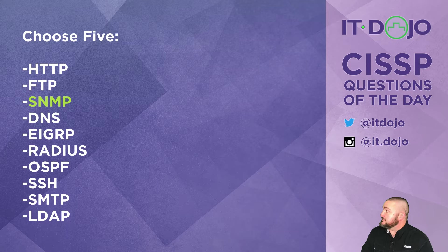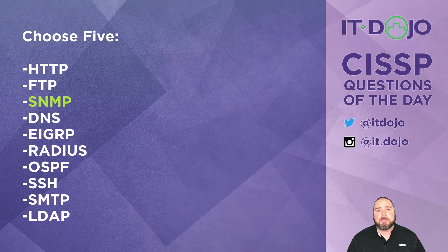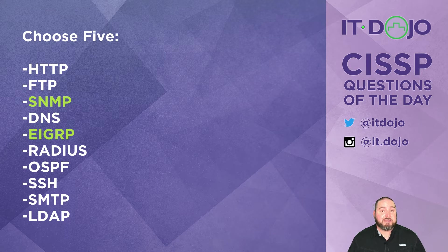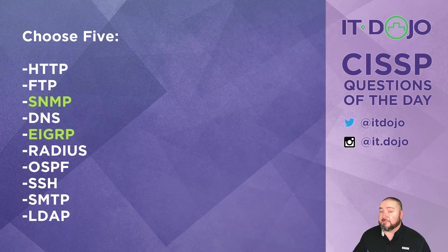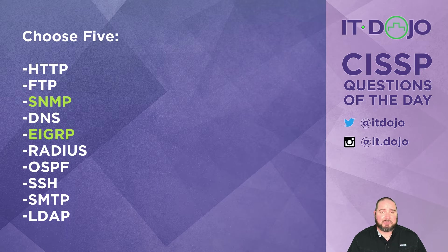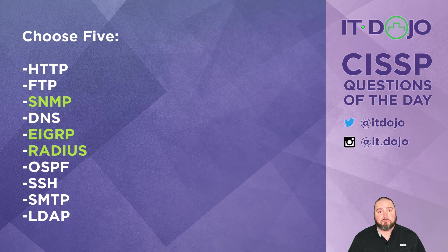Next on the list is EIGRP — the Enhanced Interior Gateway Routing Protocol. He's an interior routing protocol, so he stays inside your network and doesn't go out to the internet. After that is RADIUS — the Remote Authentication Dial-In User Service. We don't typically allow those particular ports to go out to the internet either. So EIGRP and RADIUS are two more correct answers.